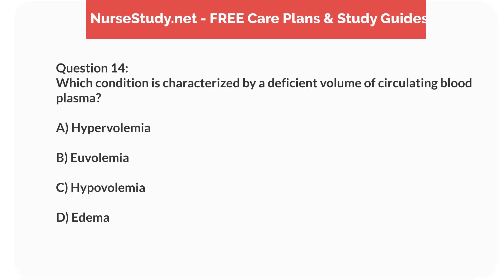Question 14. Which condition is characterized by a deficient volume of circulating blood plasma? A. Hypervolemia. B. Euvolemia. C. Hypovolemia. D. Edema.